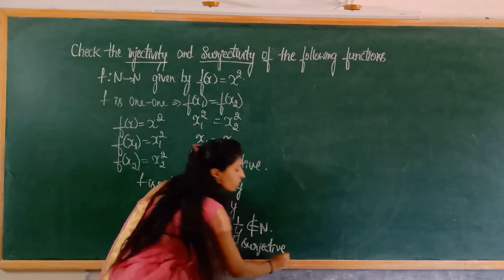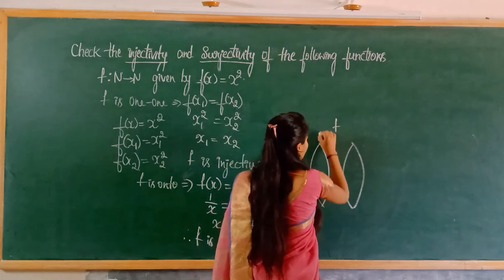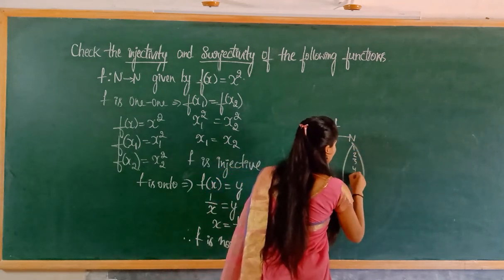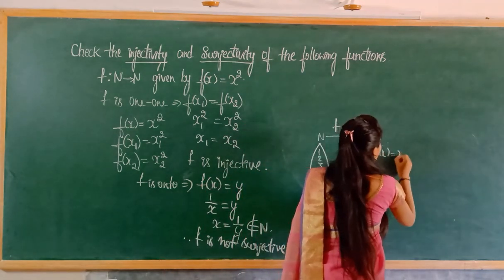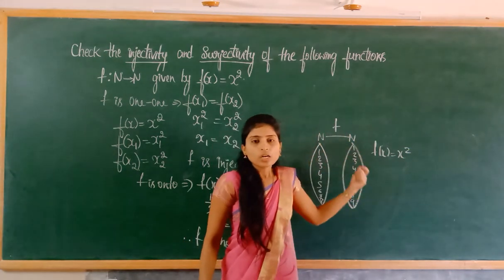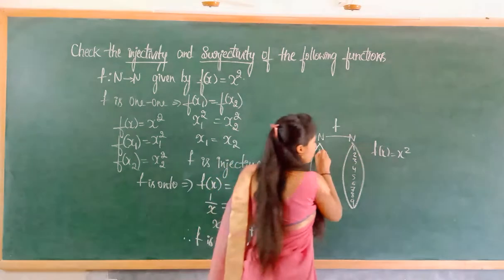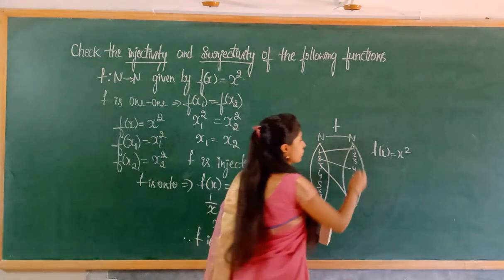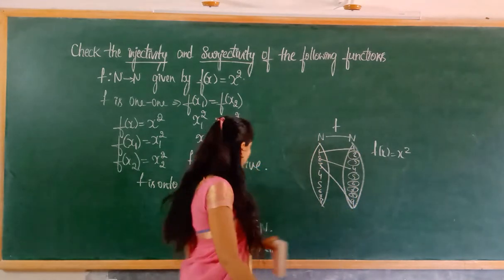Visually for onto: the onto condition requires all elements of the co-domain to have at least one pre-image in the domain. But here 1 maps to 1, 2 maps to 4, 3 maps to 9 — many other elements are left in the co-domain with no pre-image. If elements are left in the co-domain, this is not an onto function. So f is not surjective.